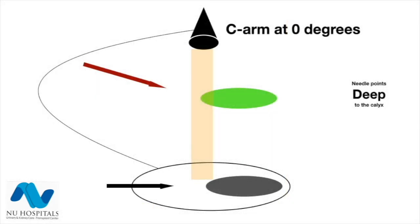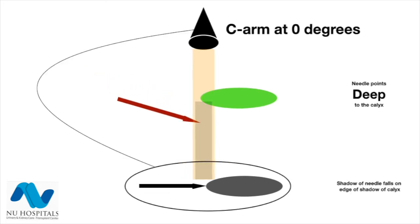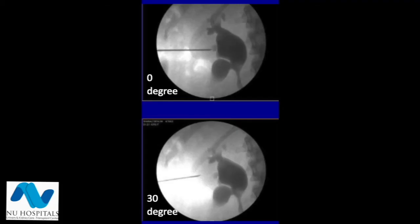When the needle tip reaches deep to the calyx, some of the x-ray beams will escape between the calyx and the tip of the needle. On the fluoroscopy screen this appears as though the needle has not reached the edge of the calyx. In this image the needle has reached at zero degrees but not at 30 degrees, meaning the needle is deep.